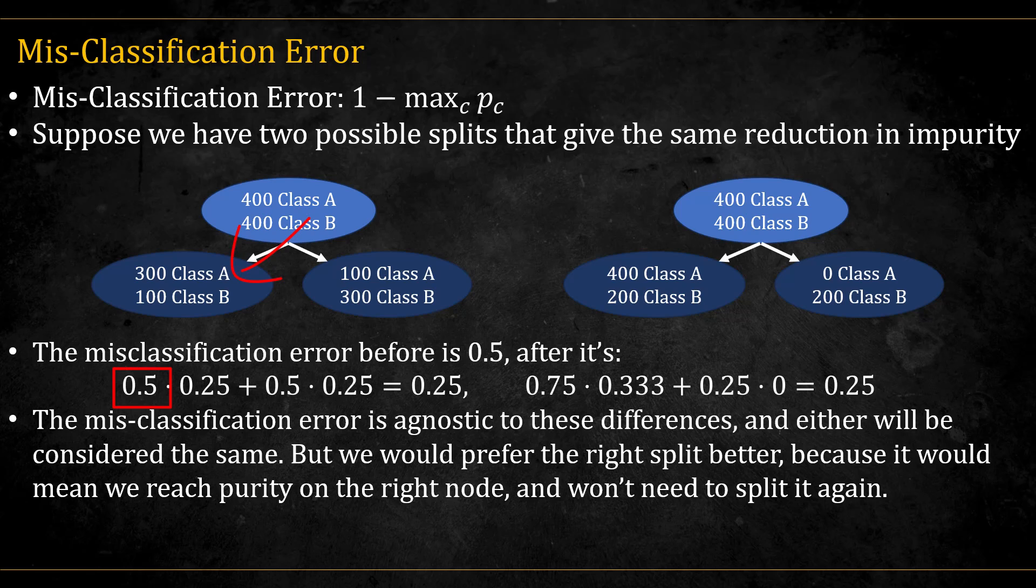On the left, there are half the observations that went to the left node, and the misclassification error there is 0.25, and on the right node it's the same. For the right split, we have three quarters of the observations going to the left node, and the misclassification there is a third. One quarter of the observation goes to the right node, and there is 0 misclassification there. So we see that the misclassification is agnostic to these different splits.